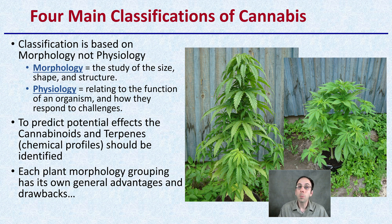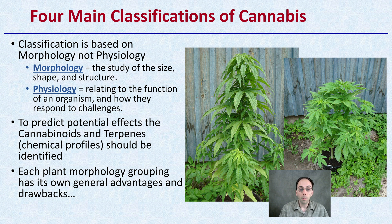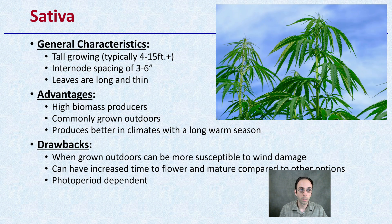To predict potential effects, the cannabinoids and terpenes — the chemical profiles — should be identified. You shouldn't be looking at just how the plant looks; you should be more concerned with the chemical profiles. Each plant morphology grouping has its own general advantages but also has a set of drawbacks.